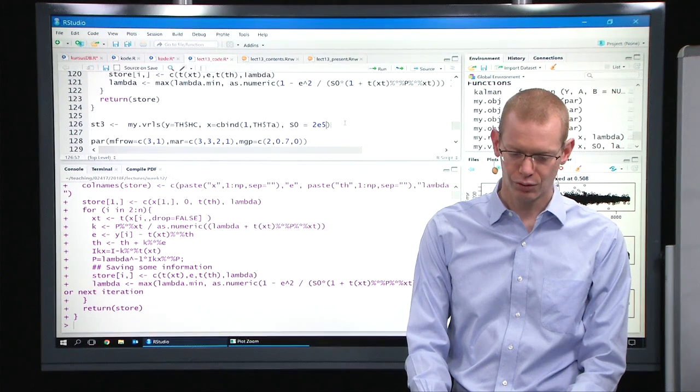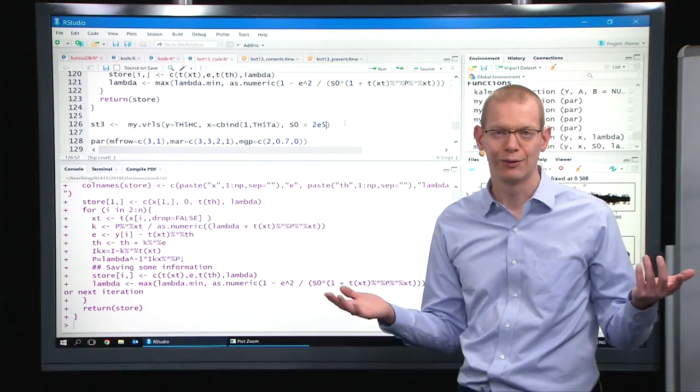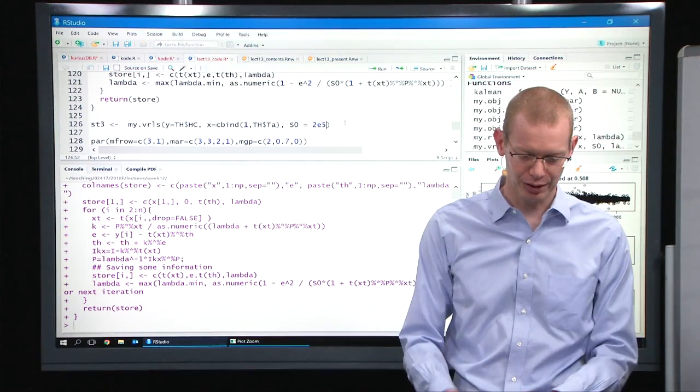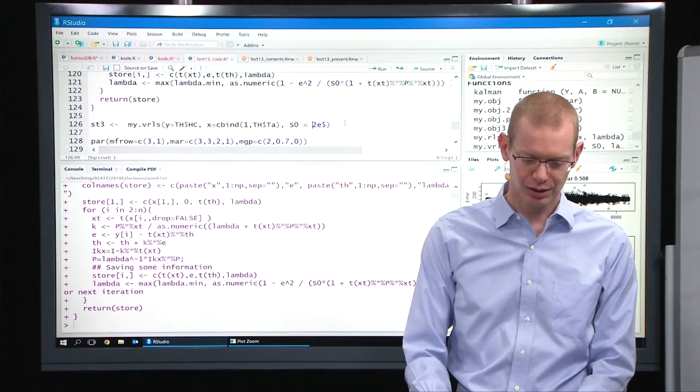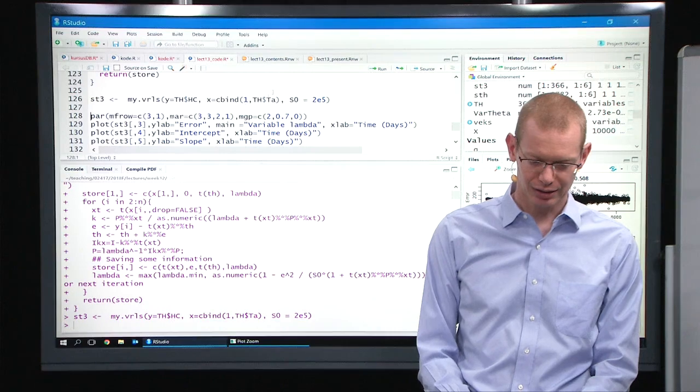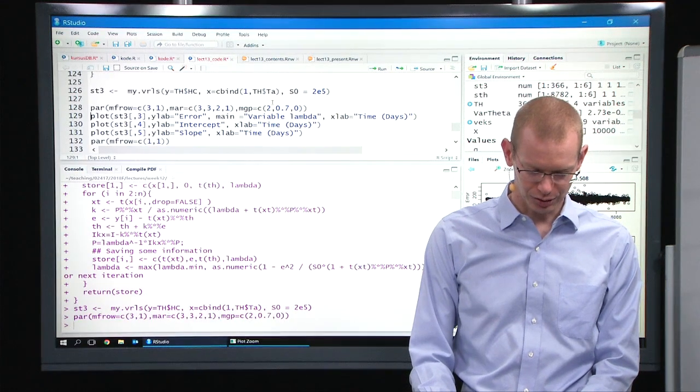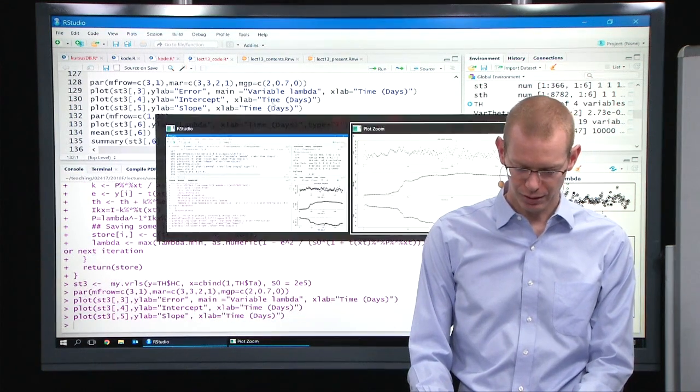Now if we run with two times ten to the fifth as our sigma naught squared, let's see what happens. Now we take the data and let's do the plot as before.